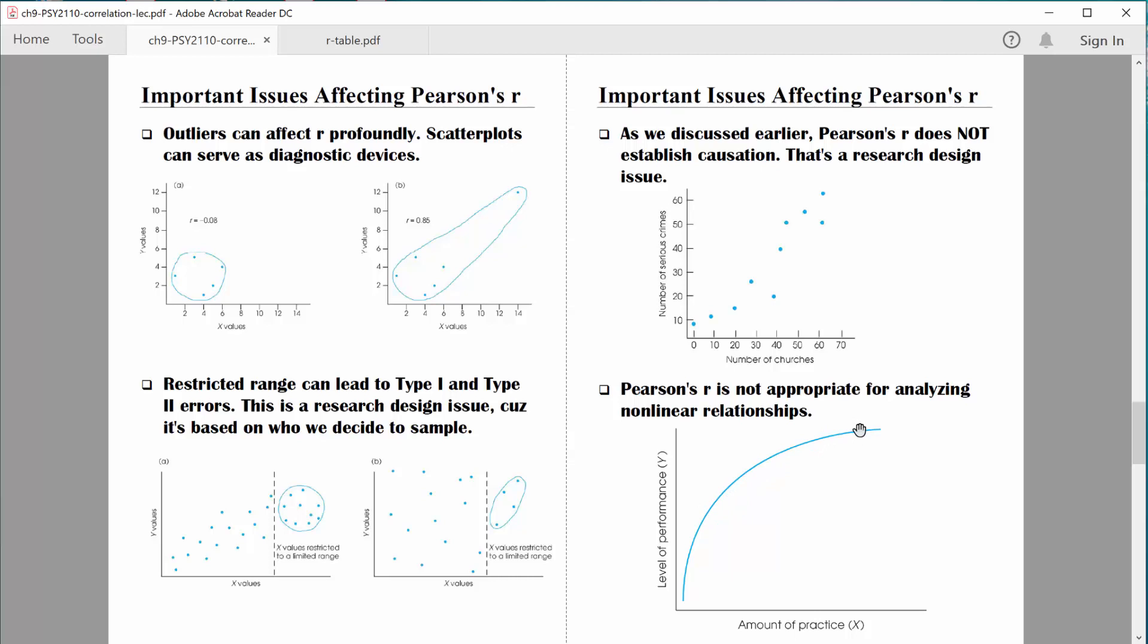This right here is a relationship between two variables, one being the amount of practice you have, and the other being your level of performance. And when you're learning some new task, typically you start performing better pretty quickly because you didn't know anything at first, and then pretty quickly you're picking things up. But then at some point your performance starts to level out and it takes really then a long time for you to show more gains. If we tried to crunch these numbers with a correlational analysis, a typical Pearson's R, we'd be trying to fit a straight line to that data. That would be inappropriate. So again, it's smart to look at those scatter plots and figure out what kind of data you have. And if the data is, in general, linearly related, then it's appropriate to do the Pearson's R correlational analysis.